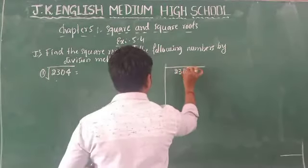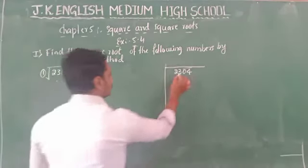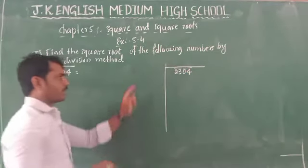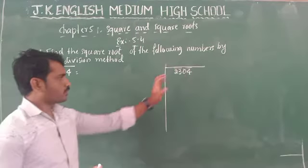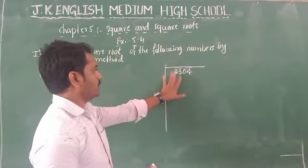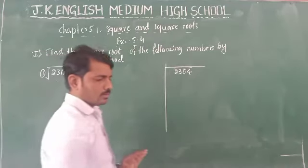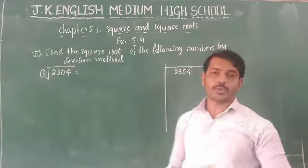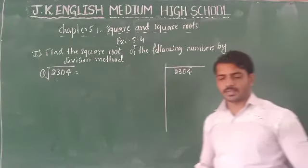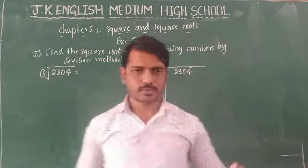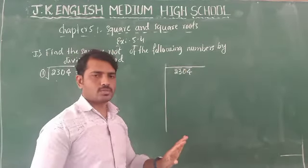So grouping the digits of 2304: the first group from the right is 04, and the second group is 23. Next, we need to find a perfect square number. The square root is a number which, when multiplied by itself, gives that value. Note that 23 is not a perfect square number, so we look for the largest square less than or equal to 23.